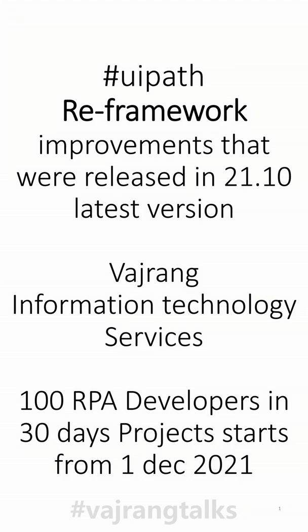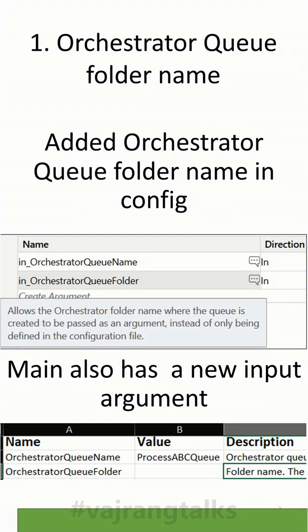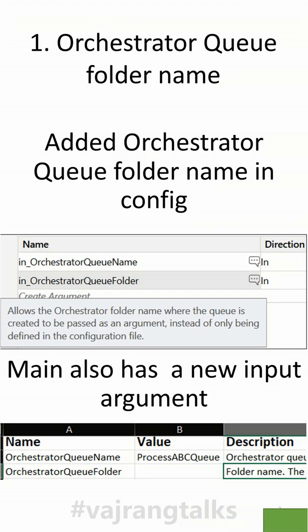With the latest versions of UiPath Orchestrator, UiPath made modern folders as mandate. We can see a new in-argument called inOrchestratorQueueFolderName. Using this, if you want to add the folder name during runtime, you can also do that — or you can add it in the config file.